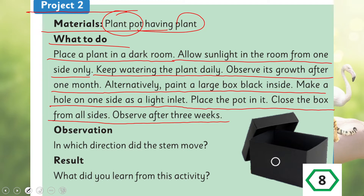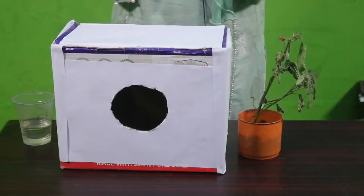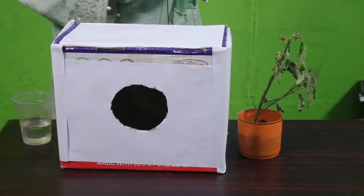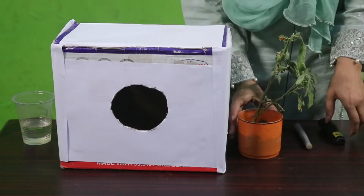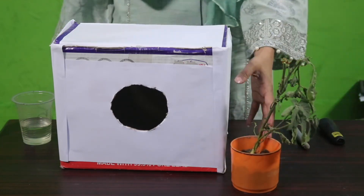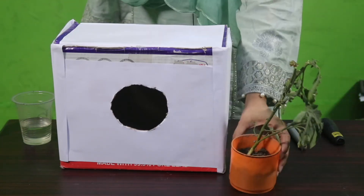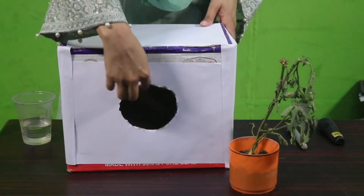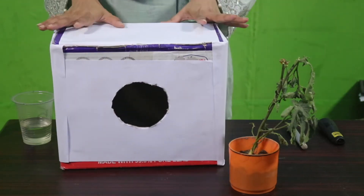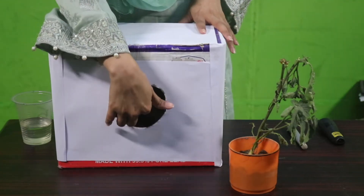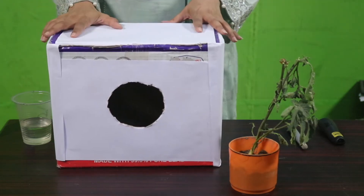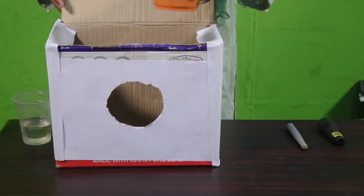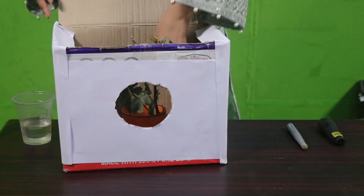To make the box: darken the room inside and bring light from one side — that is quite difficult, so alternatively use the box method. We need a plant, a pot with soil, and a box covered from all sides with a hole made on one side. We put the plant inside the box and cover it.